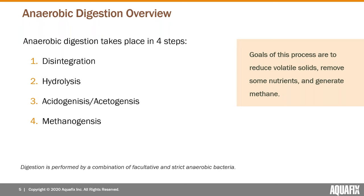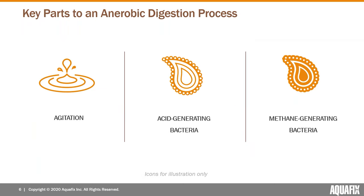After disintegration you have acetogenesis, converting long-chain fatty acids into short-chain fatty acids like acetic acid and then into acetate specifically. Then you have methanogenesis, which is the most finicky point of anaerobic digestion. The methanogens require the most specific conditions and there aren't many different methanogens present. The acid-generating bacteria convert everything into acetate, and then the methane-generating bacteria produce methane primarily from acetate.